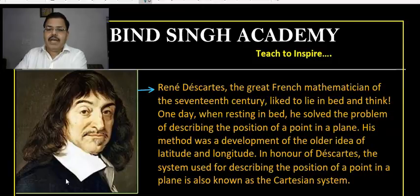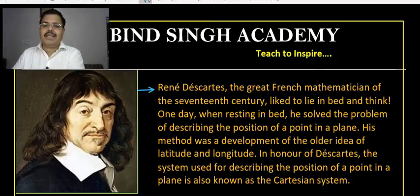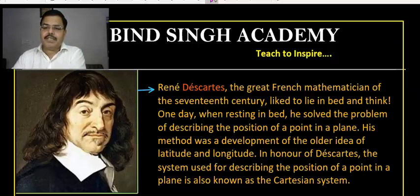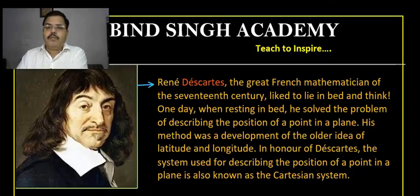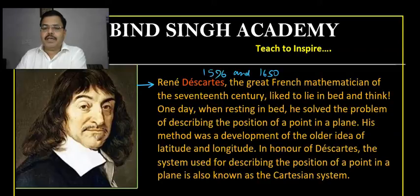This concept was first introduced by Descartes, a mathematician who was born in 1596 and died in 1650. He gave us the concept of representing the position of a point, and that representation is called the Cartesian system in honor of his name. René Descartes was a great French mathematician of the 17th century who contributed a lot to mathematics, and one of his contributions is the Cartesian system.